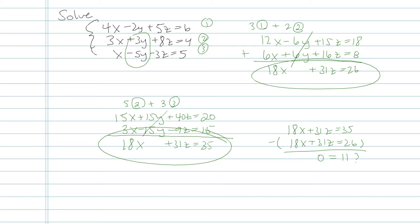There's no x, y, z numbers I could plug into this that would make 0 equal to 11. Never true. This particular 3x3 system has no solutions. There's no place where all three of these planes intersect. So this is a special situation.